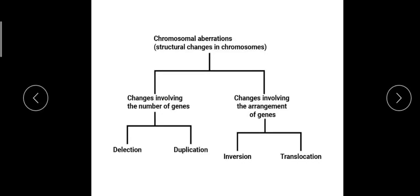Chromosomal aberrations may be of four different basic types: deletion, duplication, inversion, and translocation. Deletion is when a segment of a chromosome is deleted. Duplication is when a segment has two copies in the same chromosome. Inversion is a reversal in the order of a segment. Translocation is an exchange of chromosome segments.